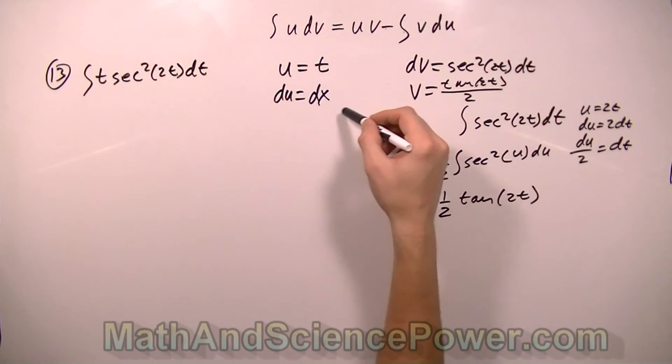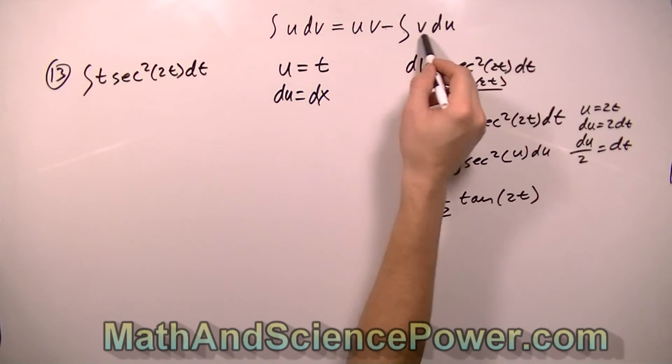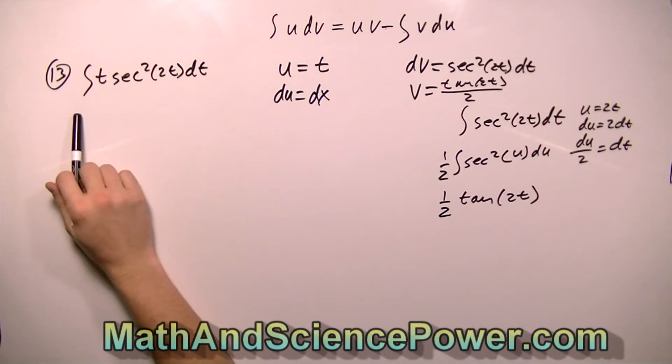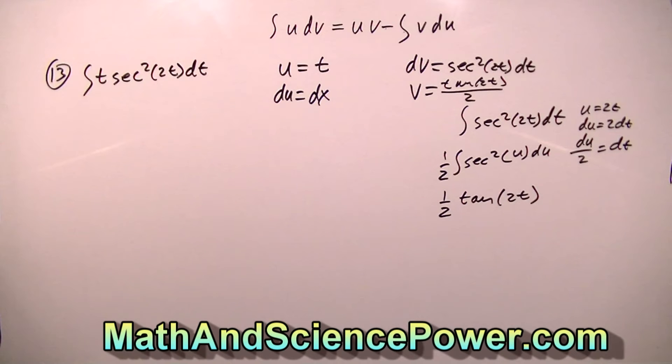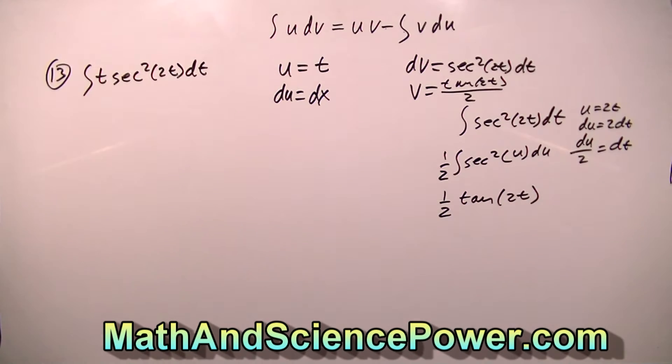So now that we have all of our values set, take a moment and see if you can plug these back into our formula and see if you can evaluate the integral of t secant squared 2t dt. And when we come back, we'll compare our answers, and I'll run you through the rest of the integral.